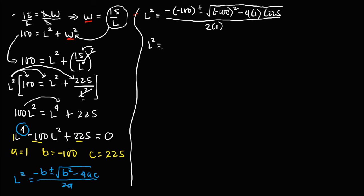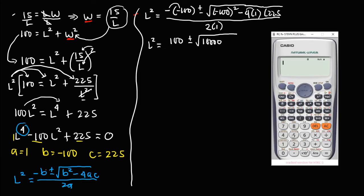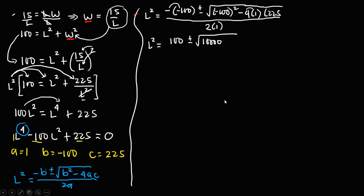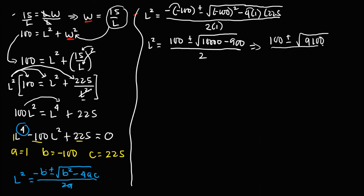Substituting the values: l squared equals negative of negative 100 — which is positive 100 — plus or minus the square root of negative 100 squared minus 4 times 1 times 225, all over 2 times 1. Negative 100 squared is 10,000, and 4 times 1 times 225 is 900. So we get: l squared equals 100 plus or minus square root of 10,000 minus 900, over 2, which simplifies to 100 plus or minus square root of 9,100, over 2.